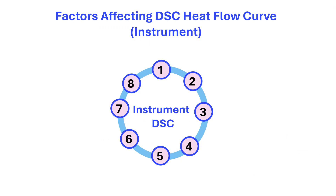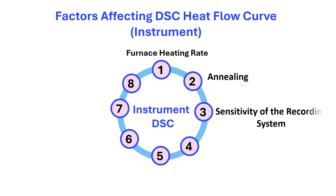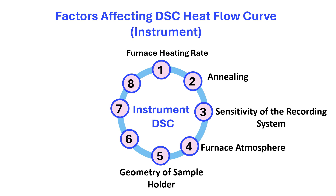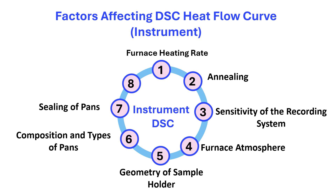Factors affecting the heat flow curve depend on the furnace: heating rate, annealing, sensitivity of the recording system, furnace atmosphere, geometry of the sample holder, composition and types of pans, sealing of pans, and intake or leak of the pans after sealing.